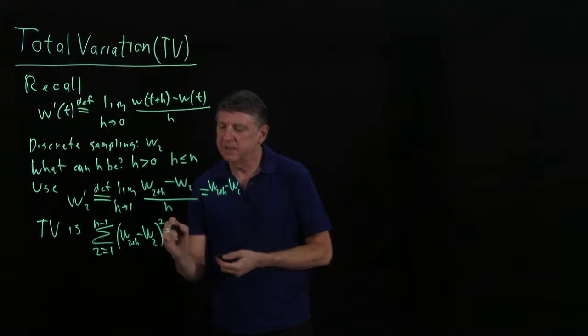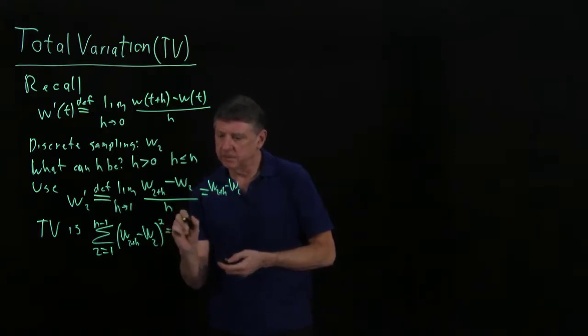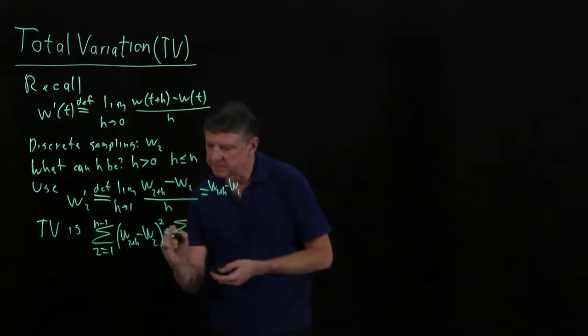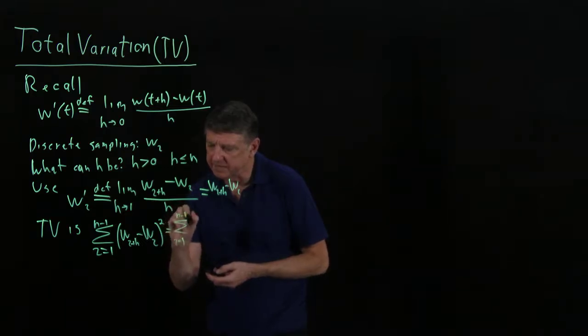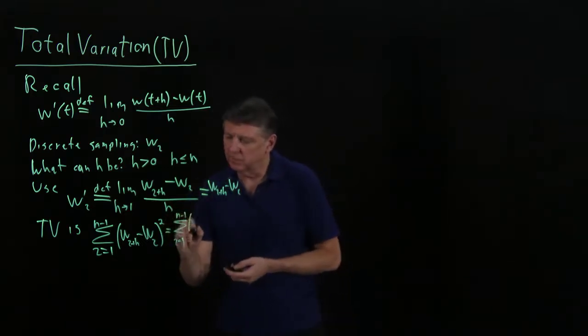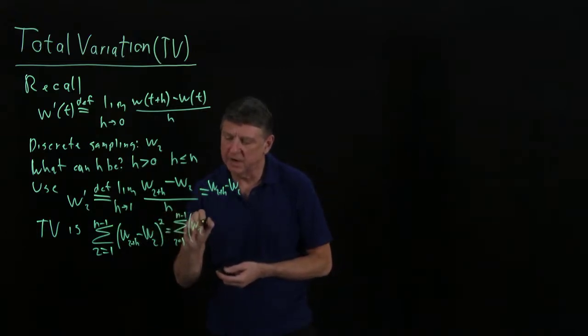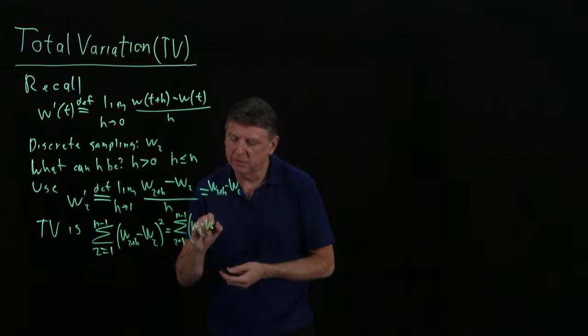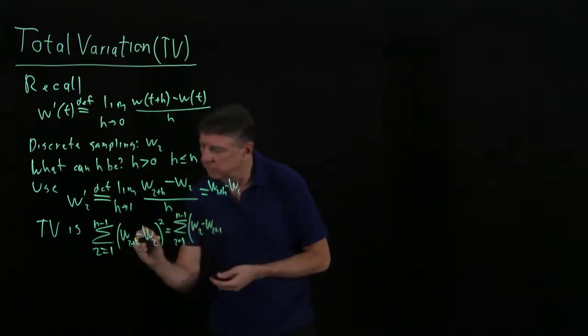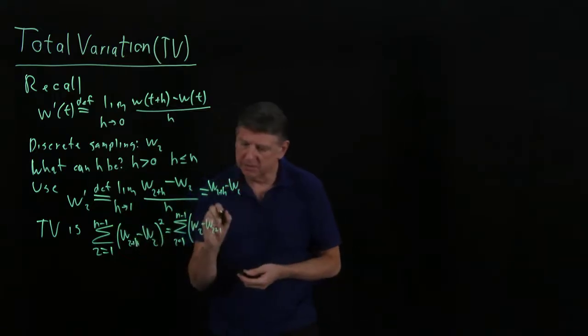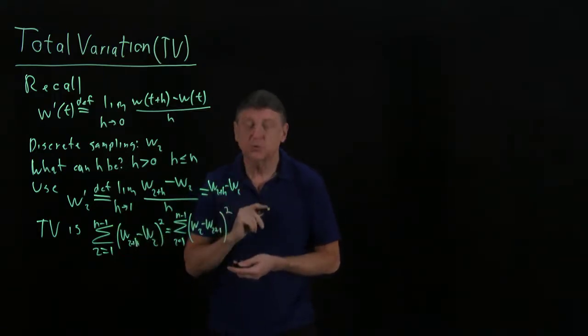And now I'm going to make one tiny change to this. That was the forward difference. And we could equally well represent this as the sum as i goes from one to n minus one. We could say, well, since we're squaring it, we could reverse that. And that's wi minus wi plus one, i plus one squared.